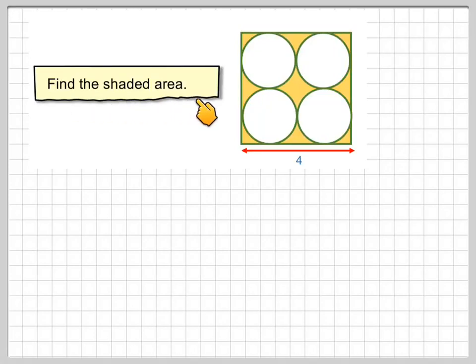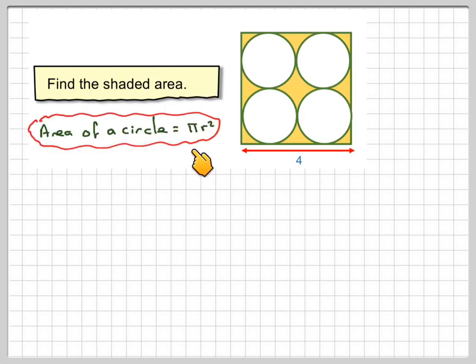We are asked to find the shaded area, so what we've got here is four circles, which are in fact in a square. We know the length of this side is four, and we know the area of a circle is πr².